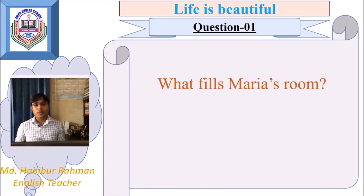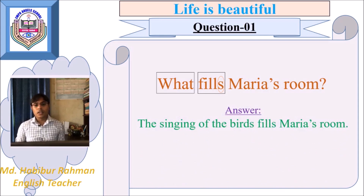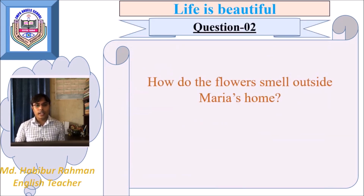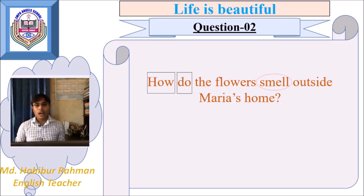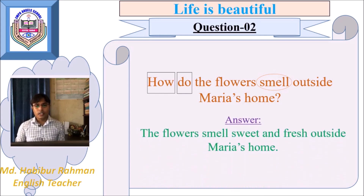Let's practice answering some questions from the passage. Our first question is: what fills Maria's room? This question contains the WH word 'what,' which is used to ask about identity, value, or nature. Here, 'what' asks about identity. The question is in present form, so we also answer in present form. The answer is: the singing of the birds fills Maria's room. Our second question is: how do the flowers smell outside Maria's home? 'How' is used to ask about condition or quality. Here it asks the quality of smell. The answer is: the flowers smell sweet and fresh outside Maria's home.